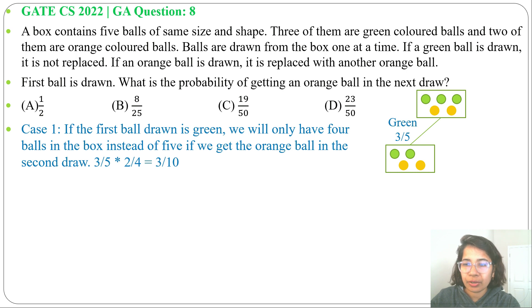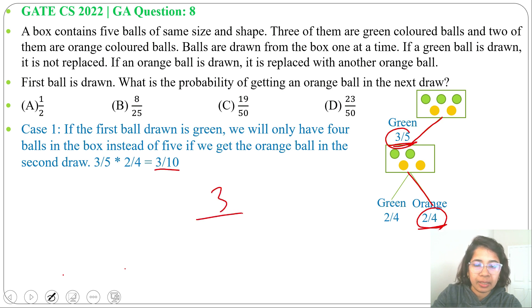Now in next draw we can pick green or orange. Green possibility is 2 by 4 as 2 balls are green. And orange possibility is 2 by 4. So total it will be 3 by 5 multiplication 2 by 4. 3 divide 5 multiplication 2 divide 4. It will be 1 divide 2, now 3 divide 10. 5 multiplication 2 is 10.